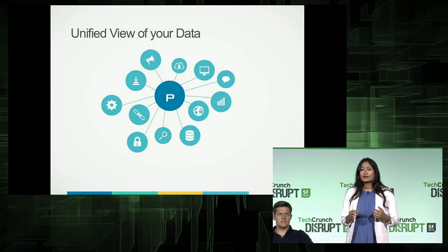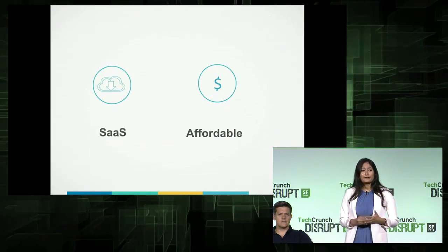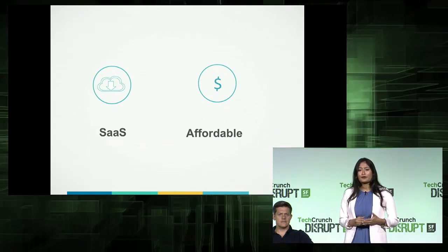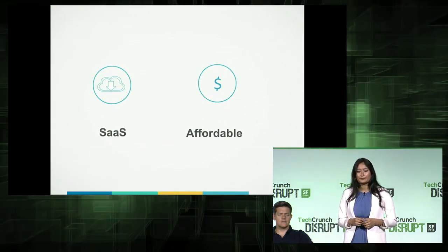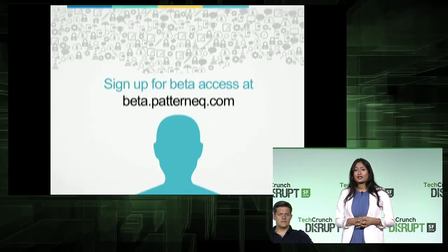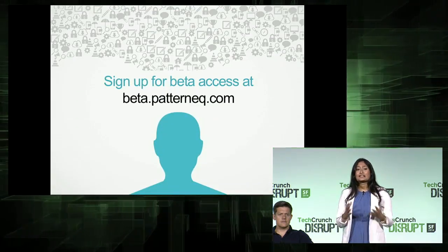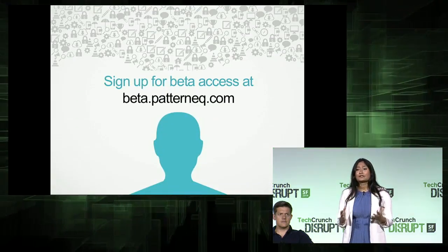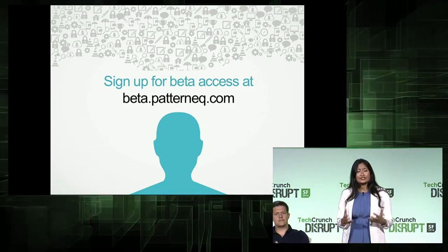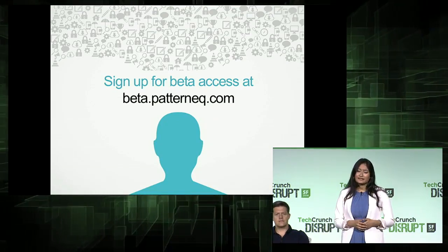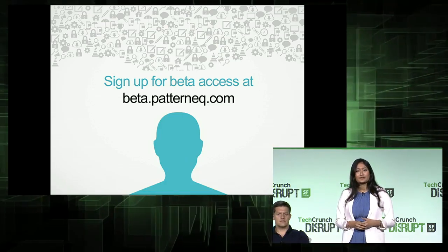It was super simple to use this tool and get insights that typically require a data scientist. We are available as a SaaS service and start at a very affordable rate of $1,000 per month that increases based on your volume. Yesterday we launched our private beta at TechCrunch Disrupt, and we are excited to invite you all to experience the power of data science yourself by signing up for beta access at data.patterneq.com.